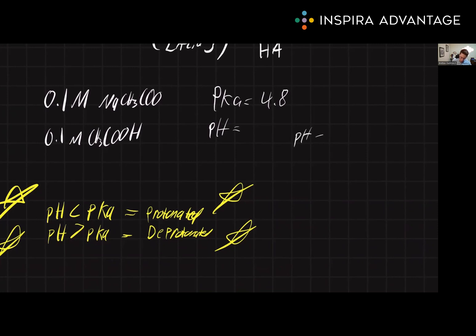First thing we'll do is rewrite our equation. pH equals pKa plus the log of base over acid. So our pH, we don't know, so we'll just leave that there. Our pKa, we have a number, 4.8. And then we also have our concentrations of 0.1 and 0.1.